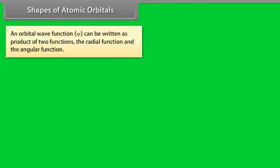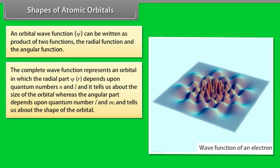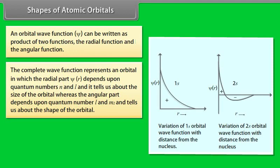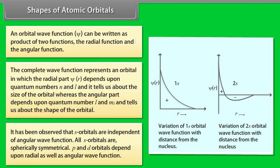Shapes of atomic orbitals: an orbital wave function ψ can be written as a product of two functions — the radial function and the angular function. The radial part ψ(r) depends upon quantum numbers N and L and tells us about the size of the orbital, whereas the angular part depends upon quantum numbers L and ML and tells us about the shape of the orbital. The positive and negative signs indicate that the orbital wave function is positive or negative in a particular region. S orbitals are independent of the angular wave function and are spherically symmetrical. P and D orbitals depend upon both radial and angular wave functions.